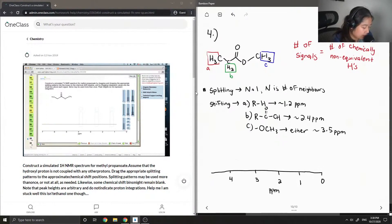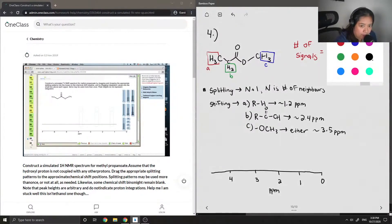And now I'm just going to be looking at how each of these hydrogens should split. So let's start with A. If you look at its neighbors, there are two hydrogens. So if we do the n plus 1 rule, then this should split as a triplet.